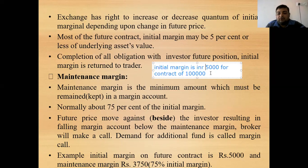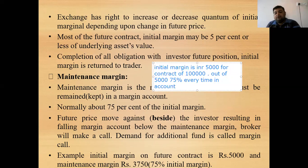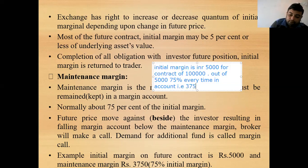Out of the ₹5,000 initial margin, 75% must be maintained in the account at all times. Calculating 75% of ₹5,000 gives us ₹3,750. This ₹3,750 is known as the maintenance margin — the amount that must be retained in the account every time.